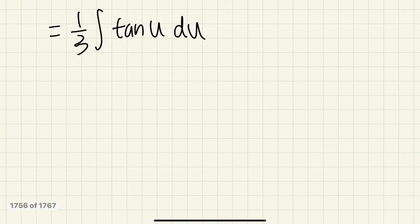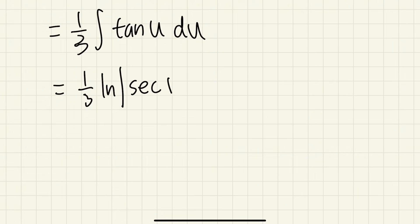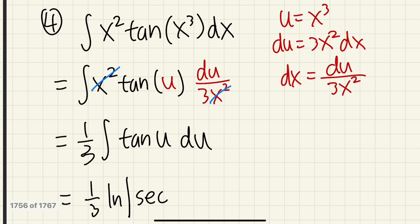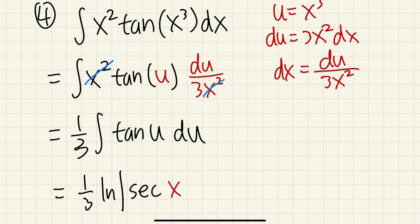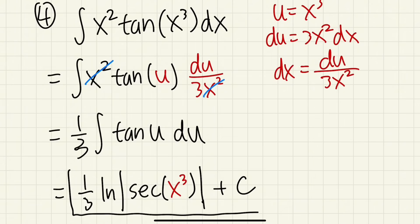Now we just need the integral of tan(u) in the u world — a standard result. We get 1/3 · ln|sec(u)|. Since u = x³, we put that in with parentheses to emphasize x cubed is inside the secant function: 1/3 · ln|sec(x³)|, and we are all done.